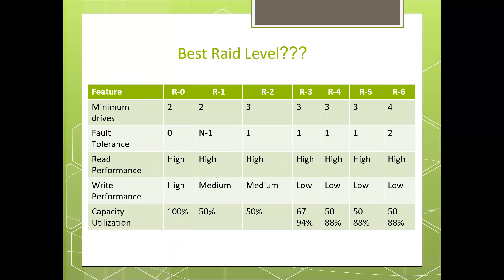These are the differences between RAID 0 through RAID 6. Here we can see that in the case of RAID 0, a minimum of two drives are required.